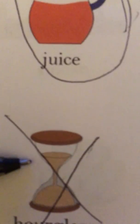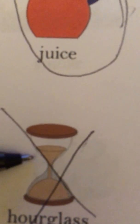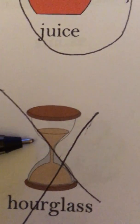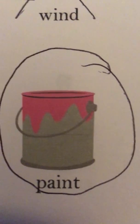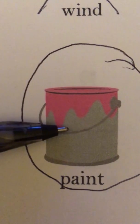An hourglass is not a liquid, so we put an X on it. Paint is a liquid, so we put a circle on it.